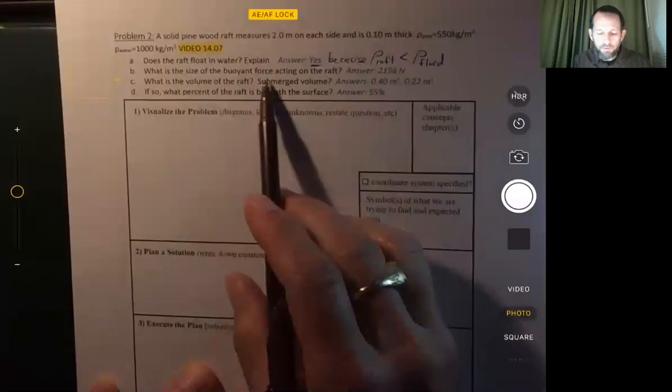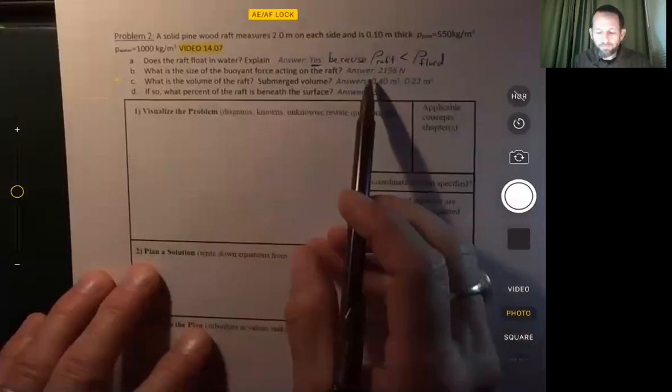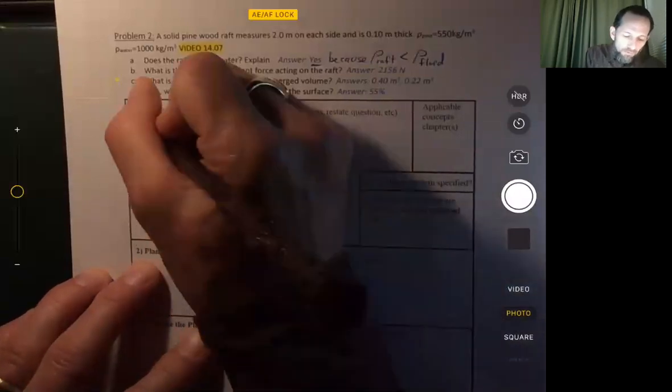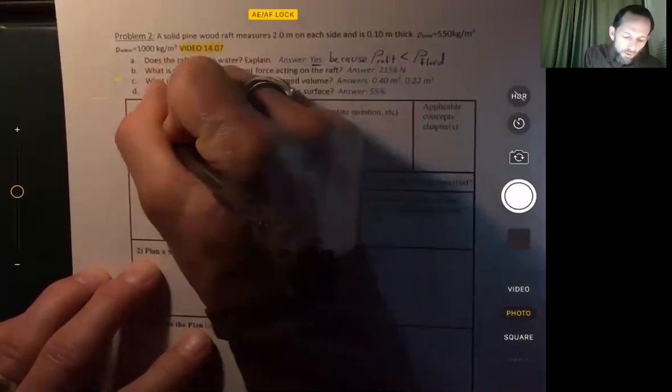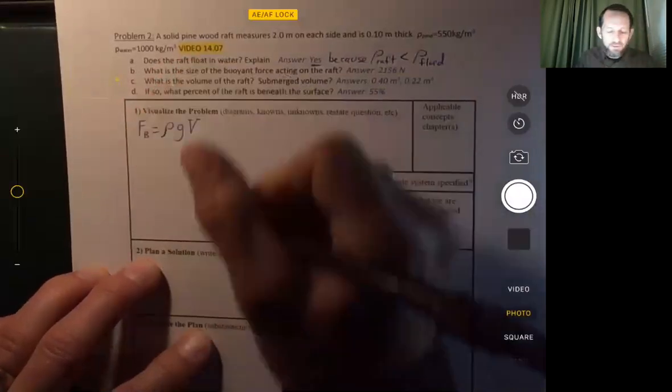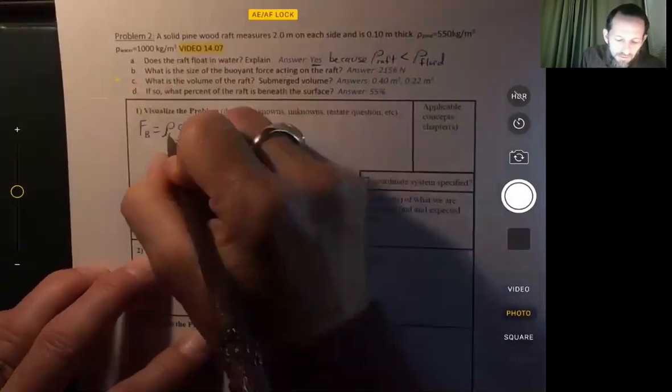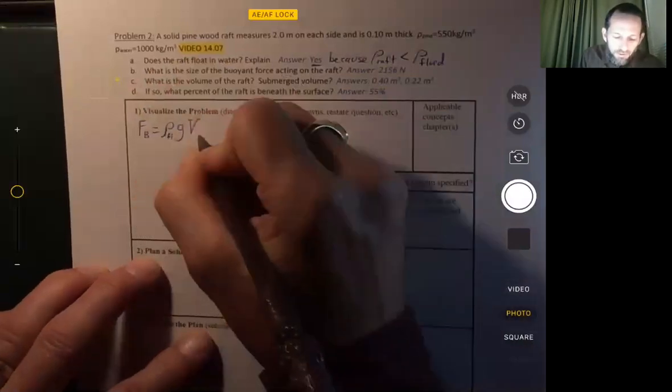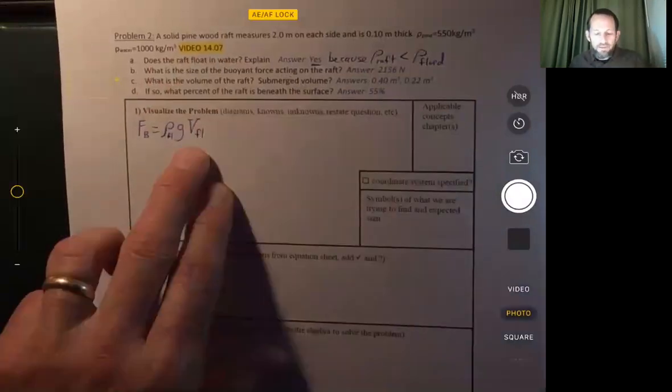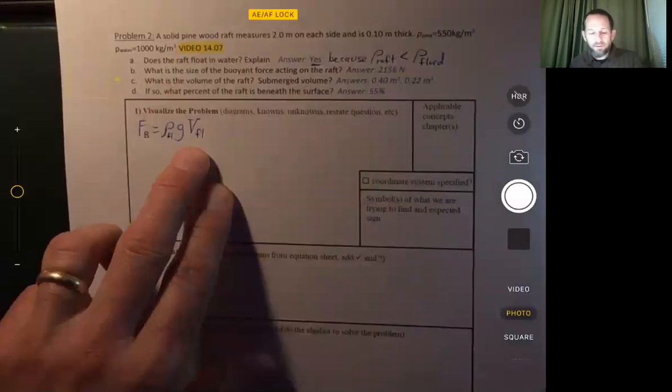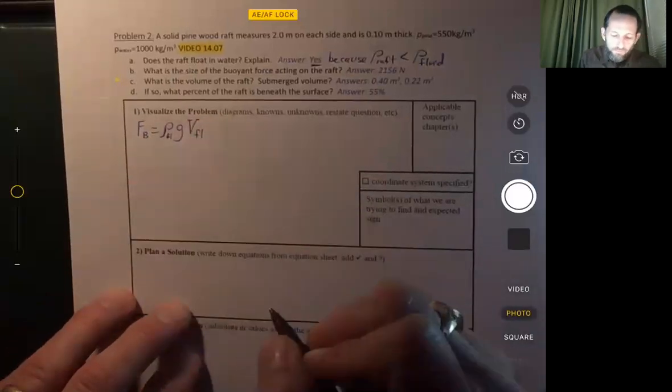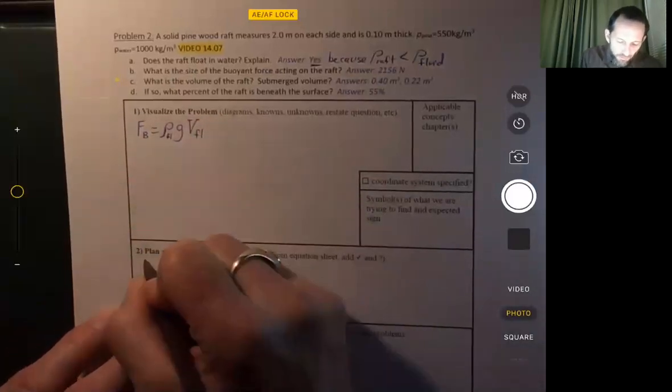What is the size of the buoyant force acting on the raft? Okay, well, we know that buoyant force is equal to rho times g times v. And you need to remember that rho is the density, not of the object, but of the fluid. And the v is not the volume of the object necessarily. It's the volume of fluid displaced. And that should have gone in the plan section. Sorry about that.